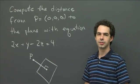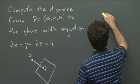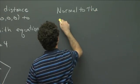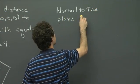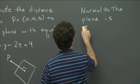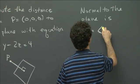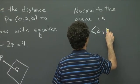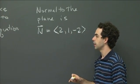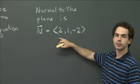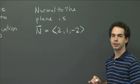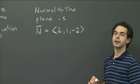Luckily, we're given the plane in this simple equation form, so the normal to the plane — when you're given an equation of a plane in this form, the normal vector is just given by the coefficients of x, y, and z. So in our case, the plane is 2x + y - 2z = 4, so the normal vector to this plane is the vector (2, 1, -2). This is the direction in which we need to go from our point P in order to get to the plane by the shortest distance.